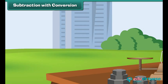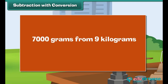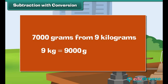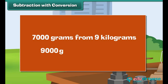Subtraction with conversion: Let us subtract 7000 grams from 9 kilograms. 9 kg equals 9 into 1000, which equals 9000 grams. So 9 kg minus 7000 grams equals 9000 grams minus 7000 grams, which equals 2000 grams.